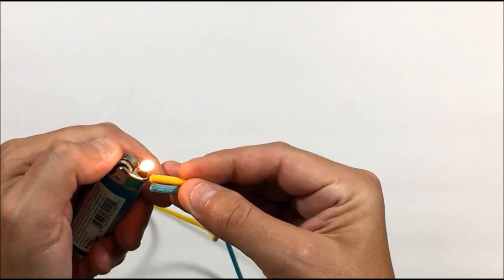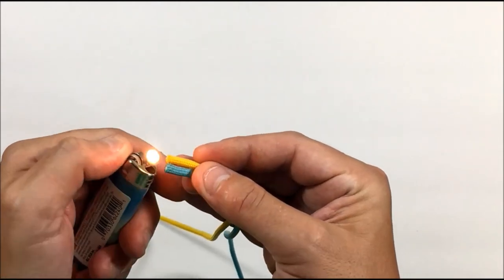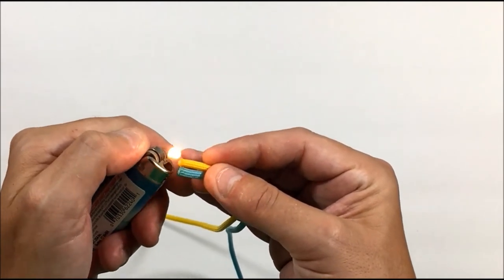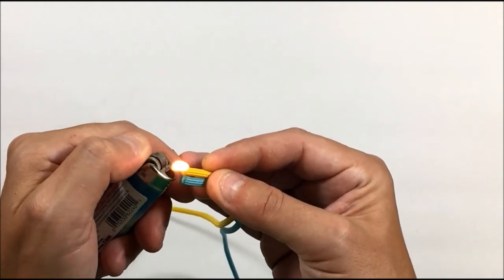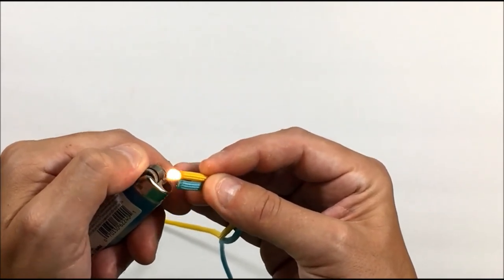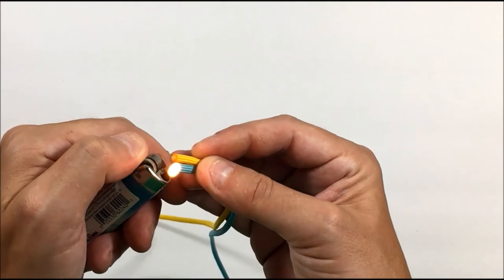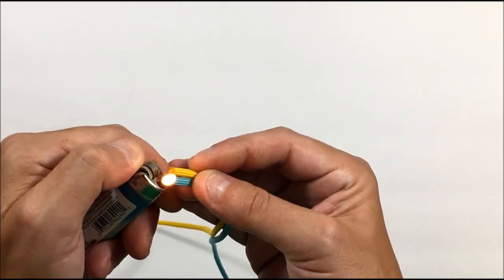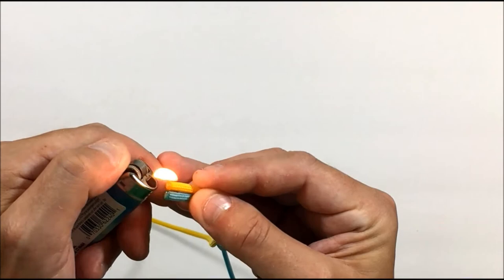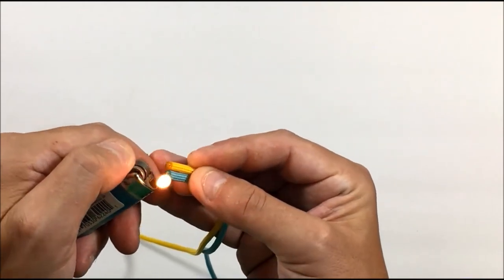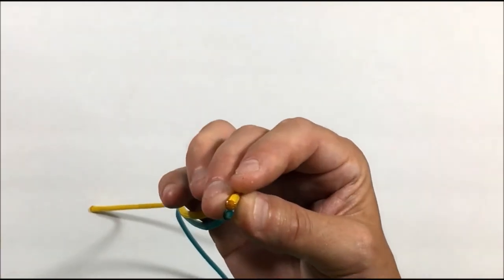And we're just going to keep it in the blue section of the flame as best you can, or the clear section in this case. You don't want it up in that yellow section because that tends to get too hot. We're just letting it melt all around, keep the flame moving until it gets nice and bubbly and melty.